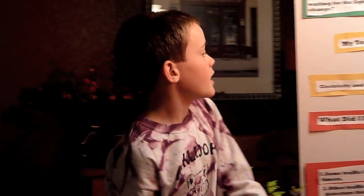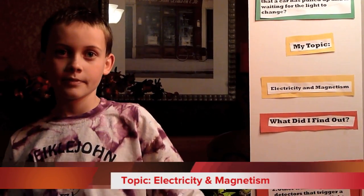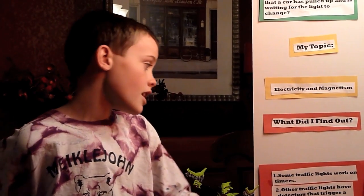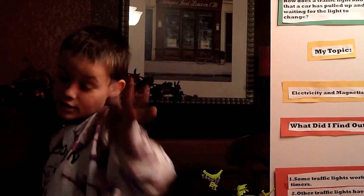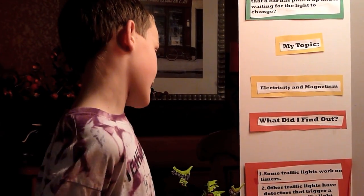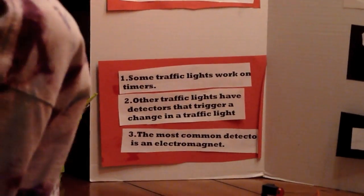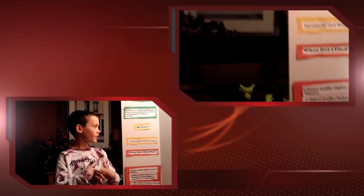And so what was your topic? It was electricity and magnetism. What did you find out when you researched this topic? Some traffic lights work on timers. Other traffic lights have detectors that trigger a change in the light. The most common detector is an electromagnet.